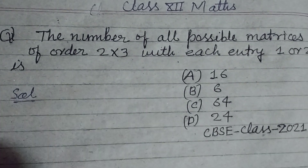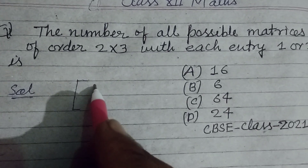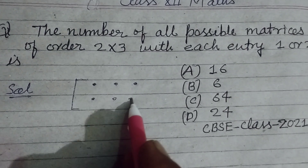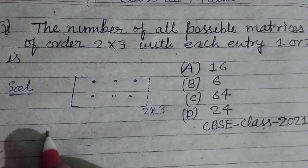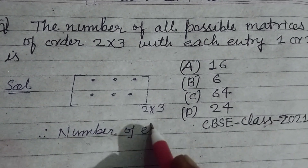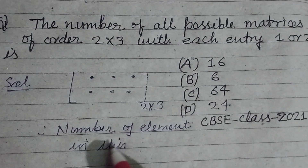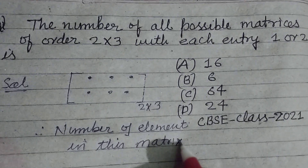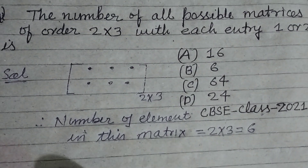So students, here is a matrix of 2 by 3 order. It has 2 rows and 3 columns. So 2 by 3 order. Therefore, the number of elements in this matrix is 2 into 3, which is 6.